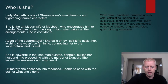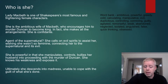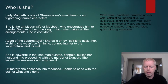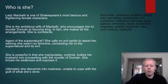She makes all the arrangements — she is his confidante. Is she an agent of the supernatural? Well, she calls on evil spirits to assist her, wishing she wasn't so feminine, connecting her to the supernatural and its evil. Some people would even say that she's the fourth witch. She is powerful in that she manipulates, controls, and bullies her husband into proceeding with the murder of Duncan — remember, Macbeth was a fierce, brave soldier we'd already met on the battlefield.